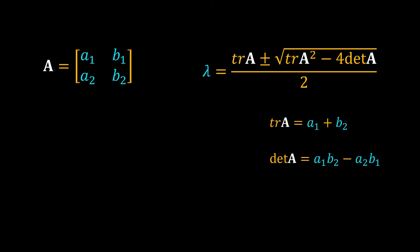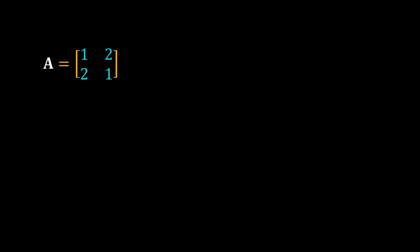Let's take a numerical example. A is a 2 by 2 matrix. The trace of this matrix is 2 and the determinant is minus 3.